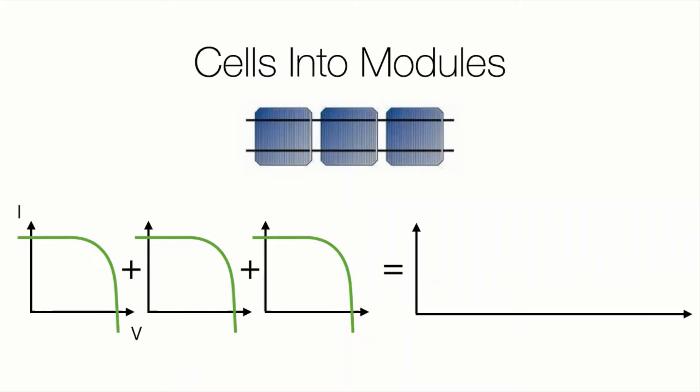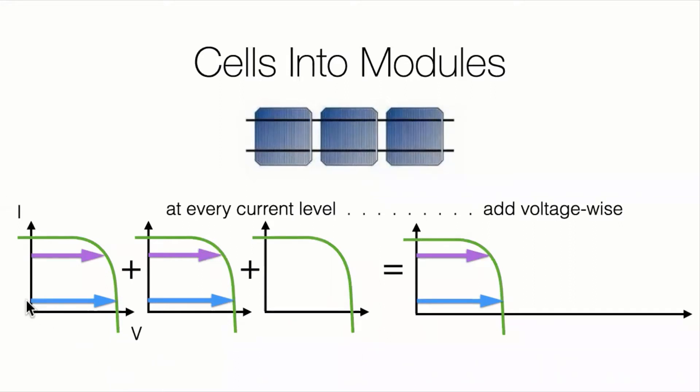So each solar cell only contributes about a half a volt, so we put them together in series. I'm going to draw my curves now based on connecting solar cells in series. When I connect things in series, I add them voltage-wise. At a certain current, add the voltage. That's what it means to connect things in series.